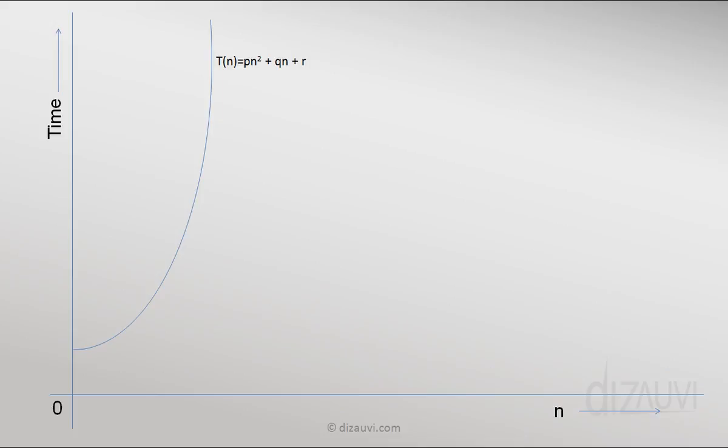But in this course, we will only deal with the Big O notation. Let's say that the order of time that we found for our algorithm is a quadratic function in n, as displayed here through this graph.